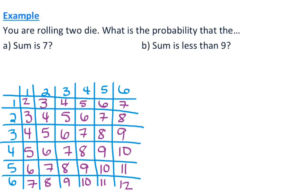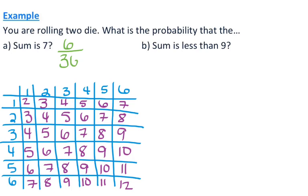What is the probability that the sum is 7? I'm looking at all the ways I can get a sum of 7 — there are 1, 2, 3, 4, 5, 6 ways to do that. So that is 6 out of 36 total outcomes, which simplifies to 1/6.